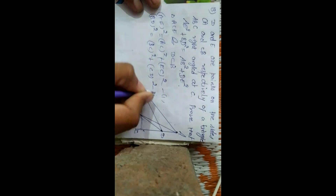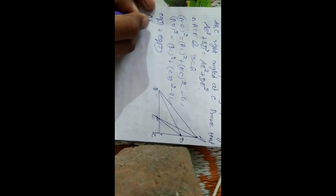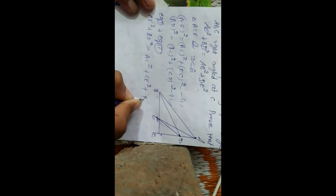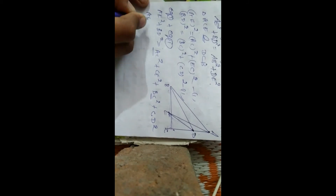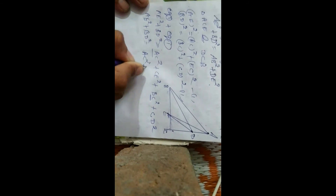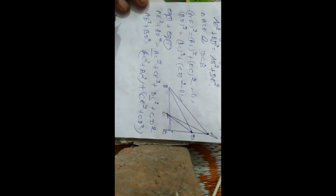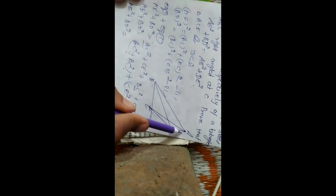Adding both equations — equation 1 plus equation 2: AE² + BD² = AC² + CE² + BC² + CD². Now, AC² + BC² = AB² (by Pythagoras in triangle ACB), and CE² + CD² = DE² (by Pythagoras in triangle DCE).